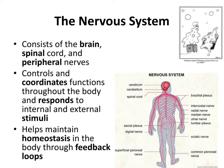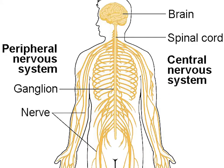This is the anatomy of the nervous system. The nervous system of vertebrates is divided into the central nervous system and the peripheral nervous system. The CNS is the major division, and consists of the brain and the spinal cord.